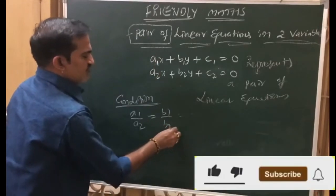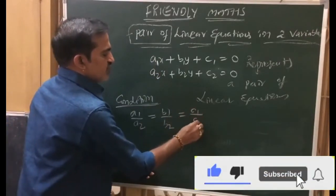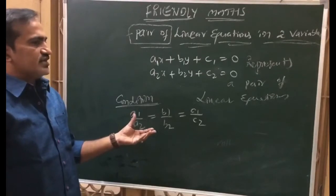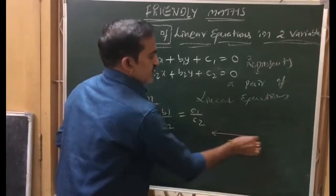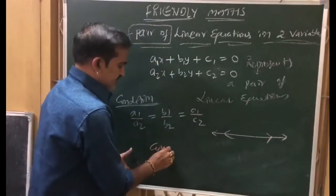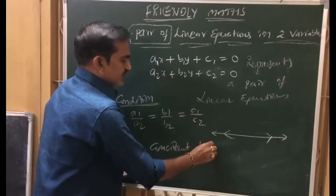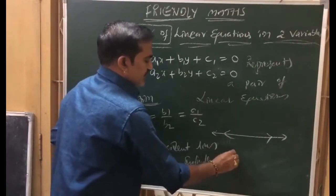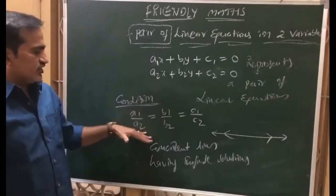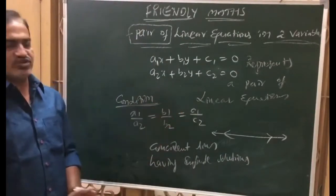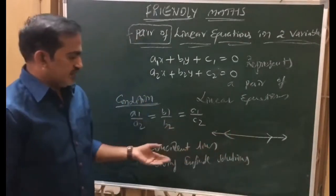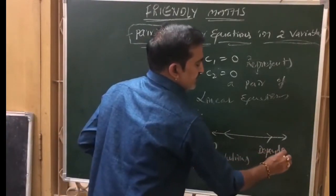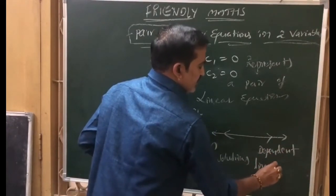The third condition: a1 by a2 is equal to b1 by b2 and also equal to c1 by c2 — all ratios of x coefficients, y coefficients, and constants are equal. These are coincident lines having infinite solutions. Coincident lines are also said to be dependent linear equations.